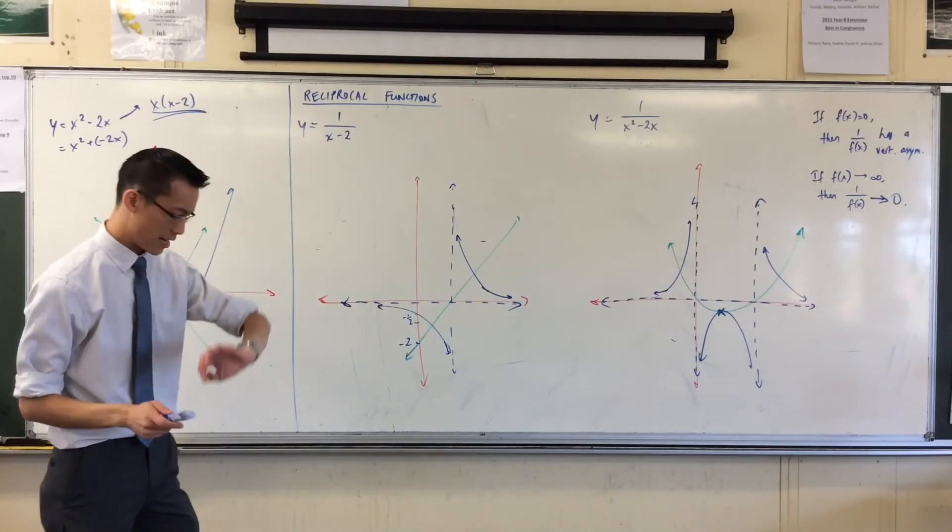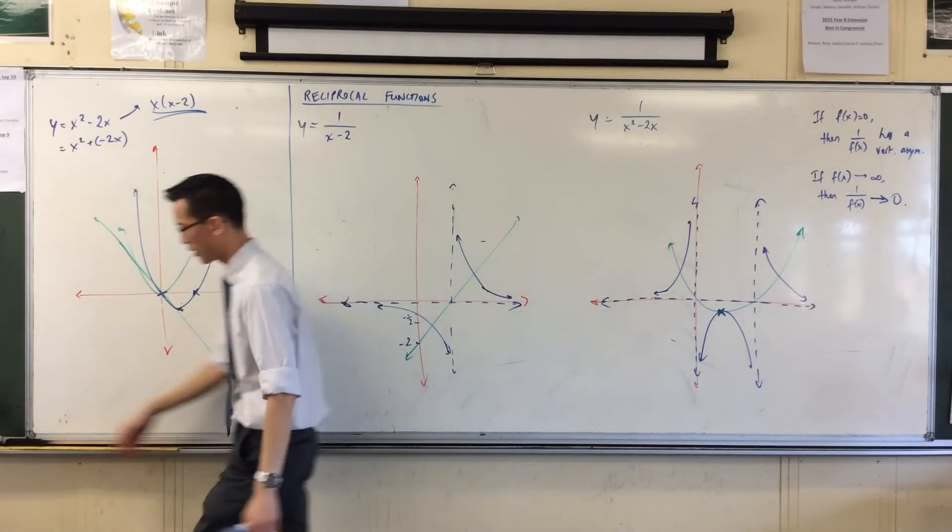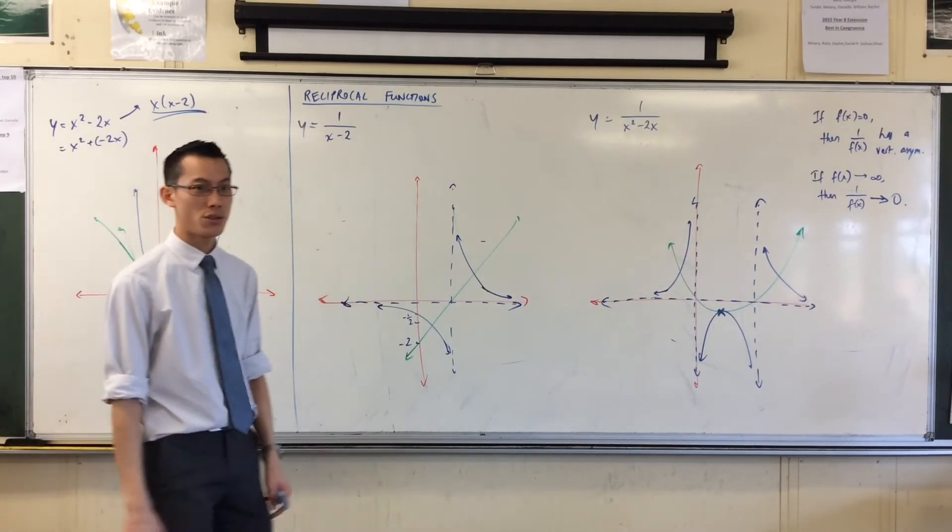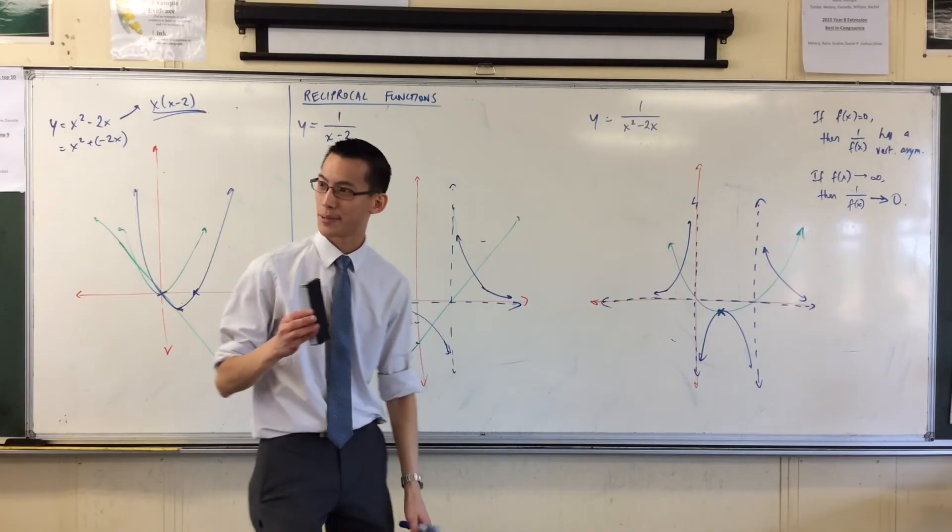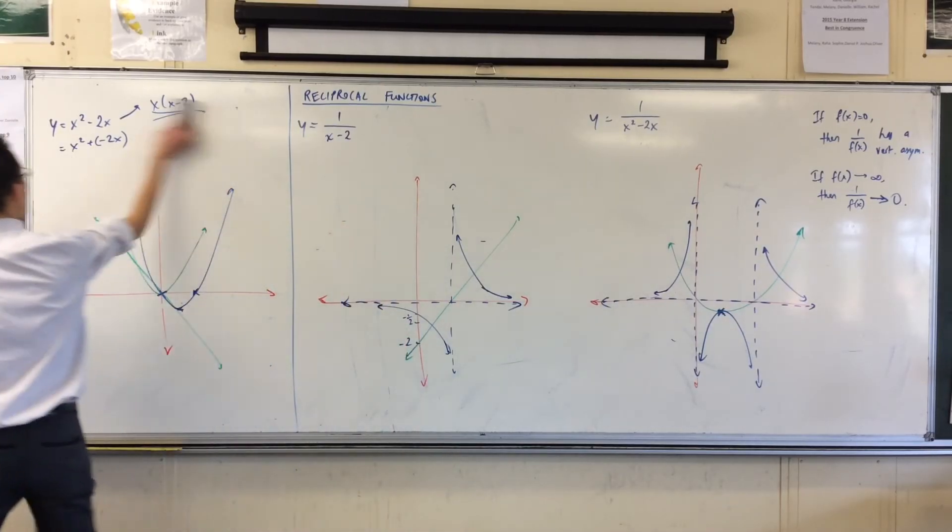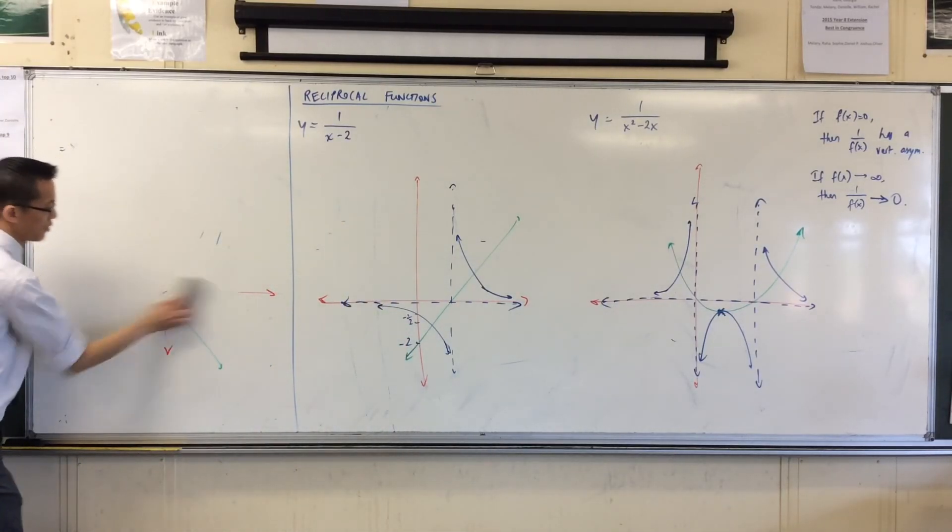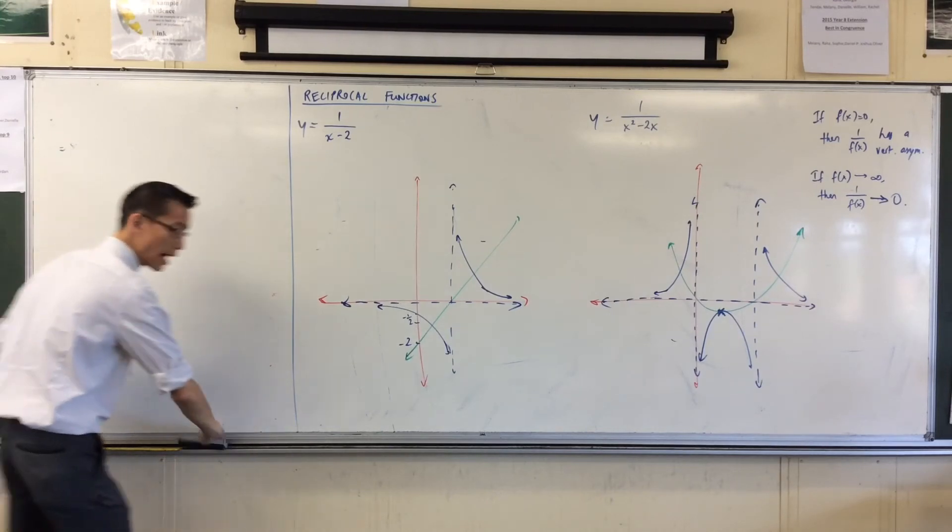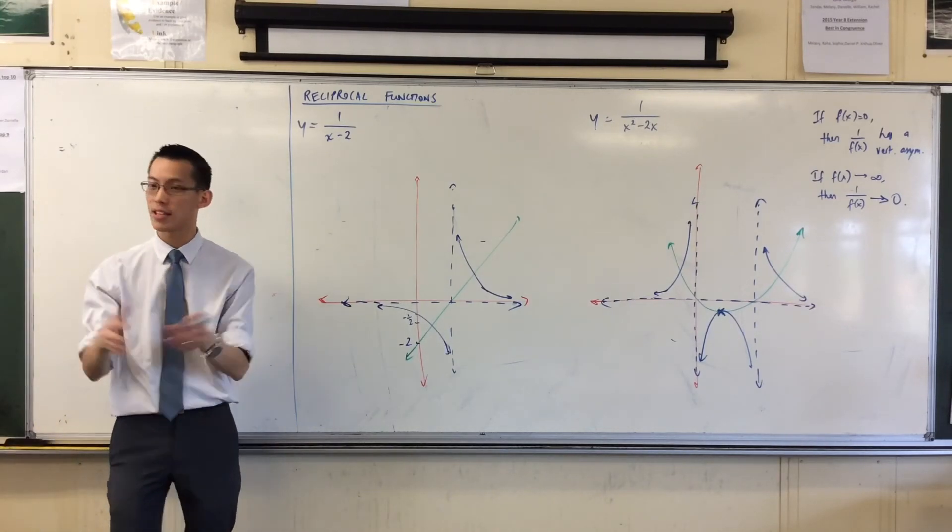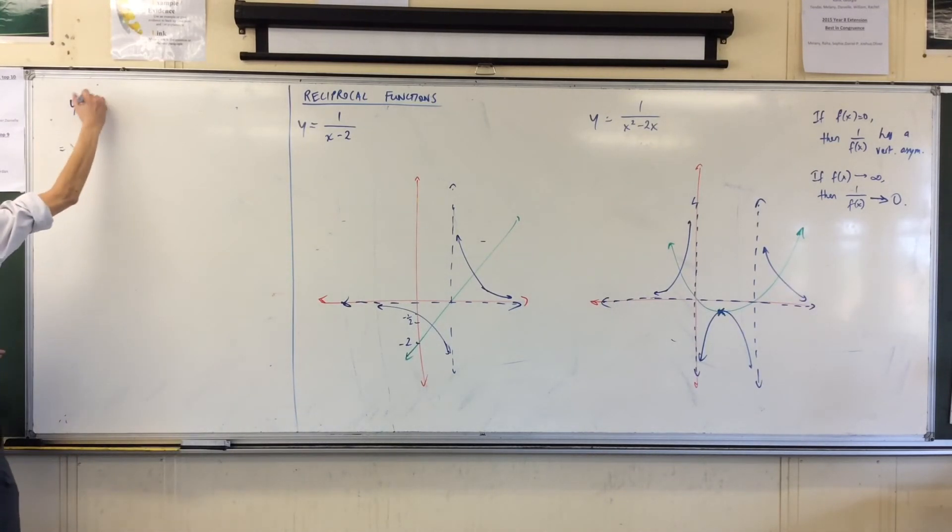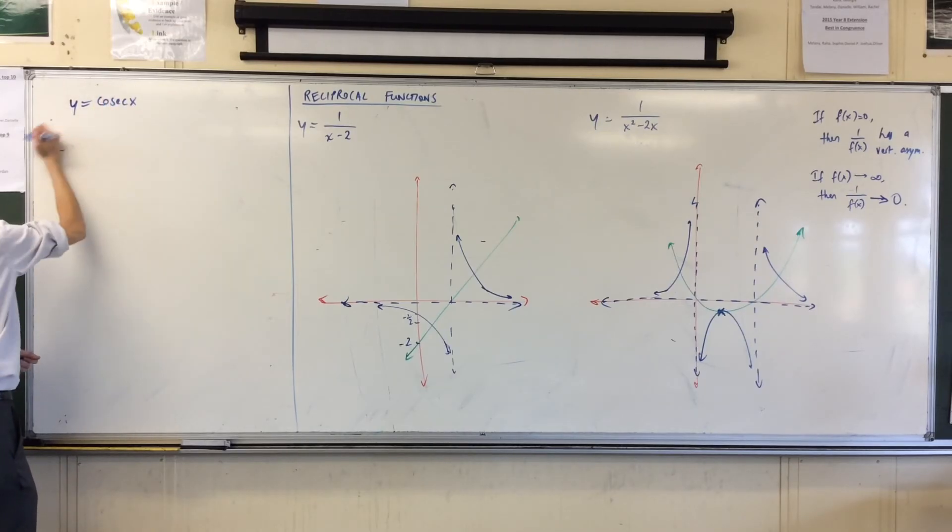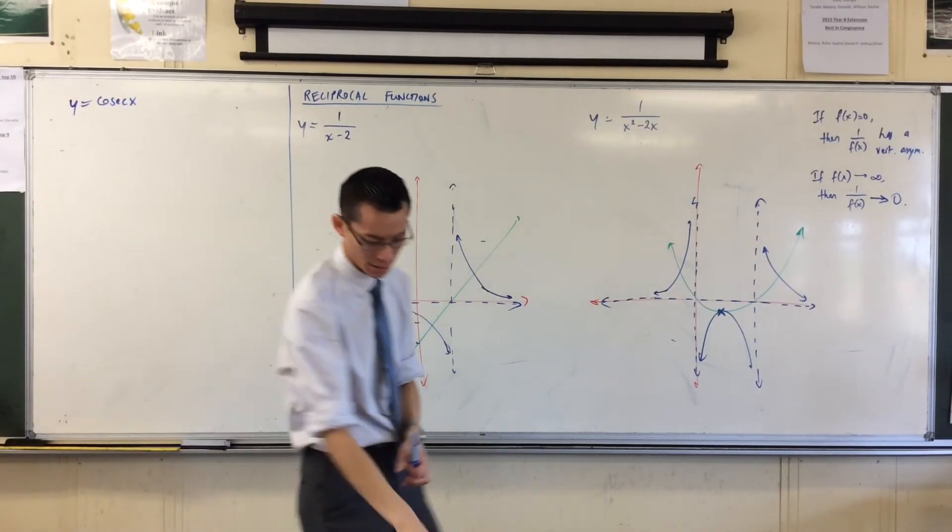Now, one last one. Yep, perfect timing. And we'll do this really quickly. We're going to do cosec x. Cosec x. And we're going to think in exactly the same way. Let's draw it from 0 to 360, we'll do. 0 to 360.